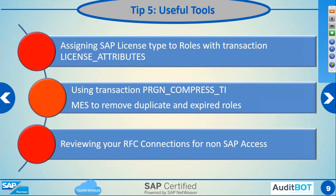Some of the tools provided by SAP include the license attributes transaction, which will help you assign a license type to roles — for example, assigning a professional license type to a security role, basis role, or configuration role. When you run the USMM, SAP will suggest a license type based on the role assigned. There is also a transaction called PRGN compressed which will remove all duplicate and expired roles from the user. This is an automated report that can remove duplicate and expired roles from users, which will also reduce your compliance issues.